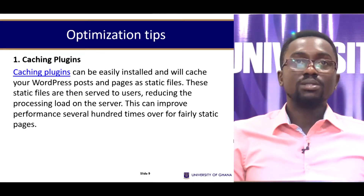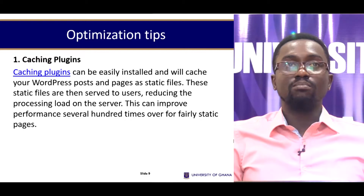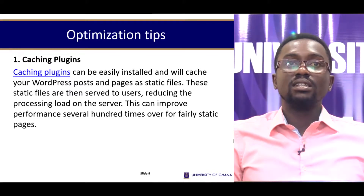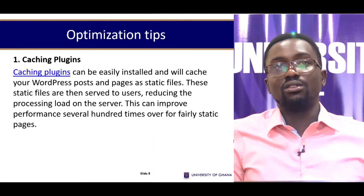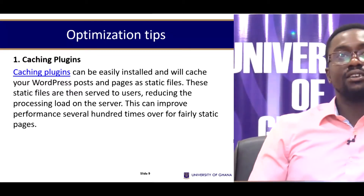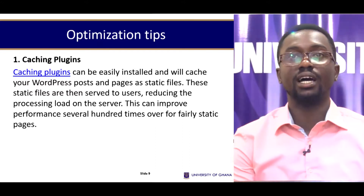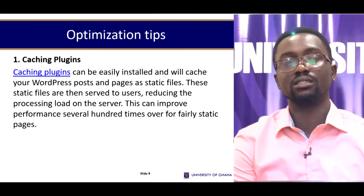Optimization tips you can employ include installing caching plugins. Caching plugins can easily be installed and will cache your WordPress posts and pages as static files. These static files are then served to users, reducing the processing load on the server, which can greatly improve performance several hundred times over for fairly static pages.